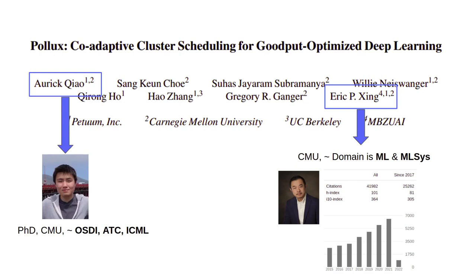The first author is a PhD student from CMU and has papers in OSDI, ATC, and ICML — one each. The second author is a prominent researcher at CMU, working primarily in ML and currently in ML systems, which is systems for machine learning.